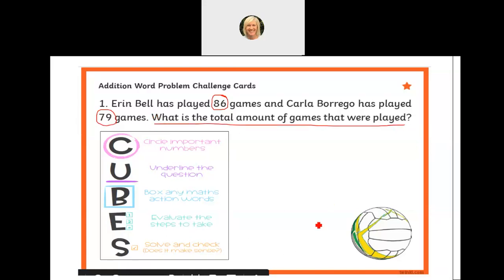The next part of CUBES, the B, is asking us to draw a box around any math action words. Our action word here for me will be the total amount, because that's going to require me to use one of the operations or a math action.